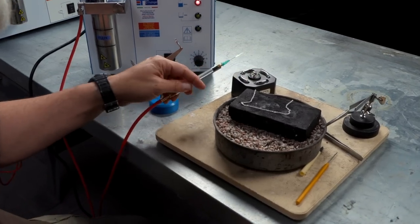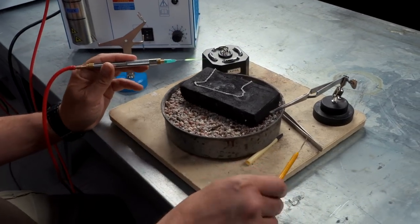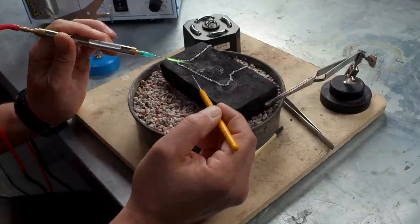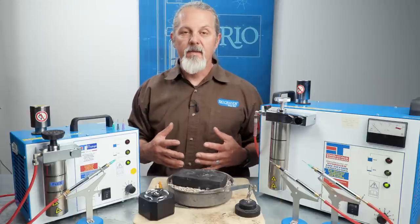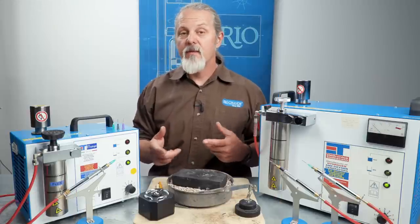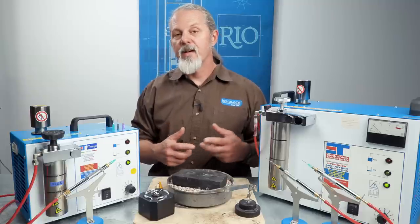These torch systems have some really cool advantages. You work more safely and you'll save time and money doing it. Because they run on their own hydrogen and oxygen, there's no need to store compressed gases in your studio, and because you don't have to refill tanks, the units will pay for themselves over time.